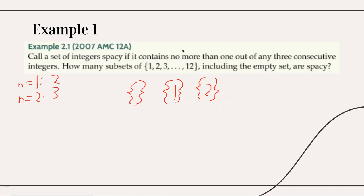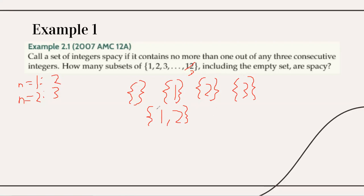What about n=3? Just like before, we have the empty set, {1}, {2}, and {3}. We cannot have more than one element: if we have any two elements, say 1 and 2, then out of the three consecutive integers 1, 2, and 3, we'd have more than one — which violates the condition. So we can only have at most one integer. For n=3, the answer is 4.